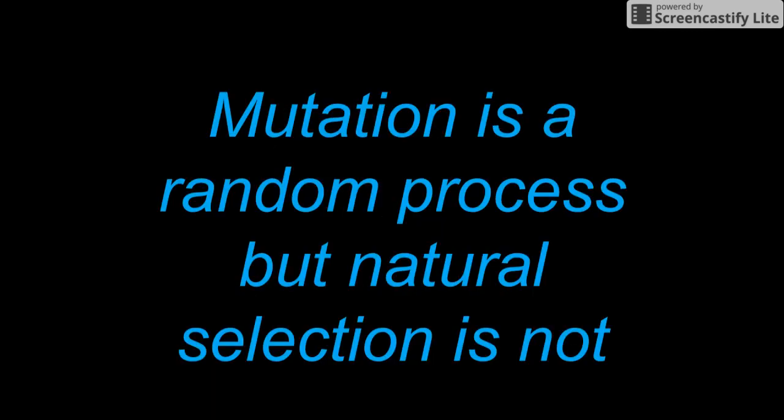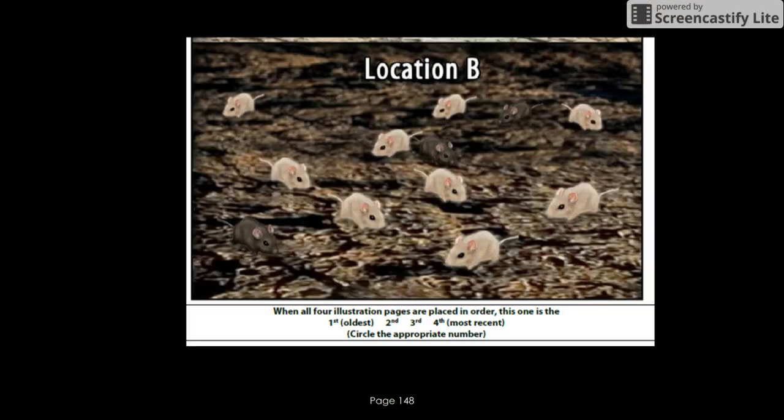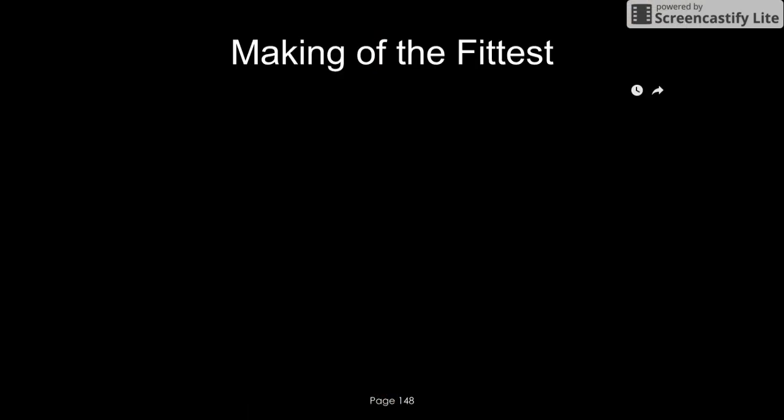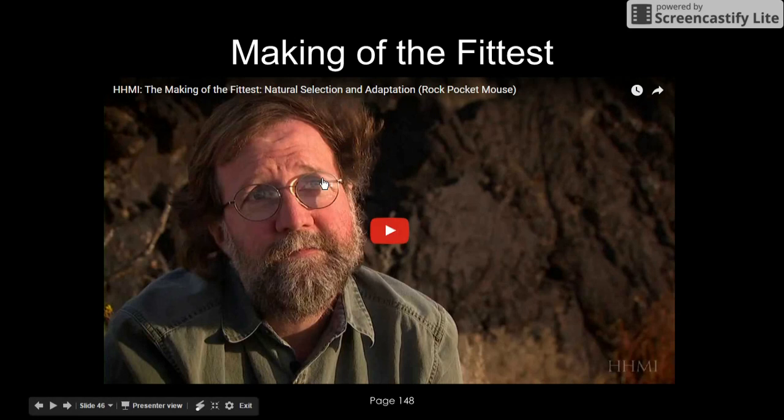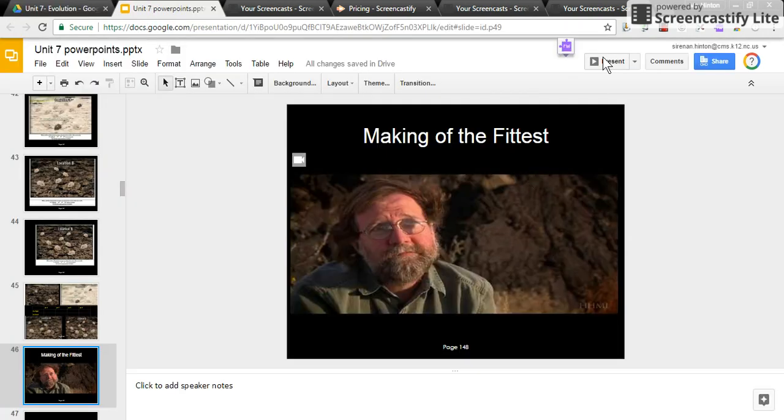We talked about mutation and natural selection and started doing a natural selection and rock pocket mice activity on page 148. There were some pictures we had to put in order according to how many mice were at each location, and we watched a video with it. If you need this picture or video, hop in your Unit 7 folder - the pictures or instructions are here, and the video is available if you open Unit 7 PowerPoint. This goes for pages 148 and 149.